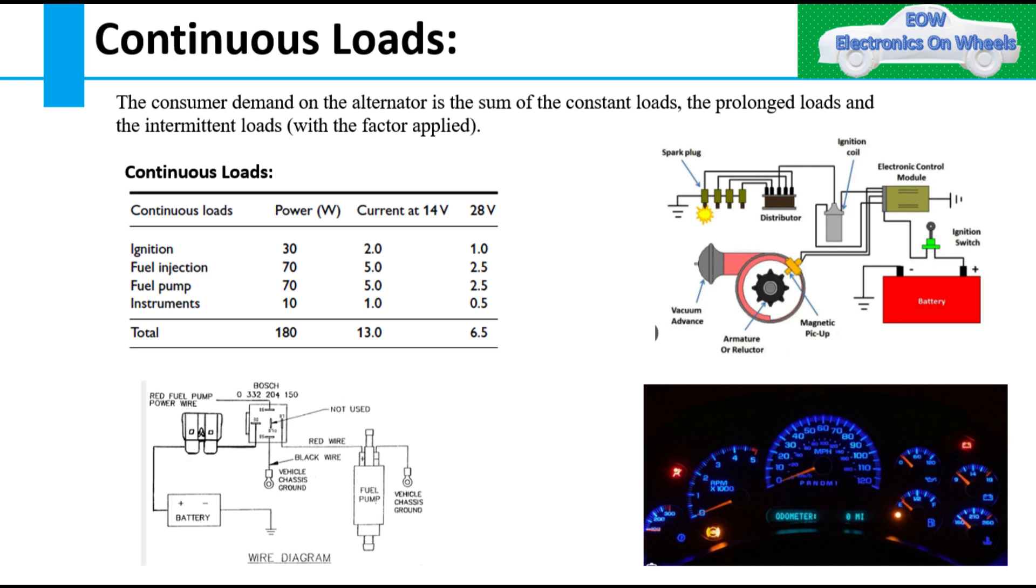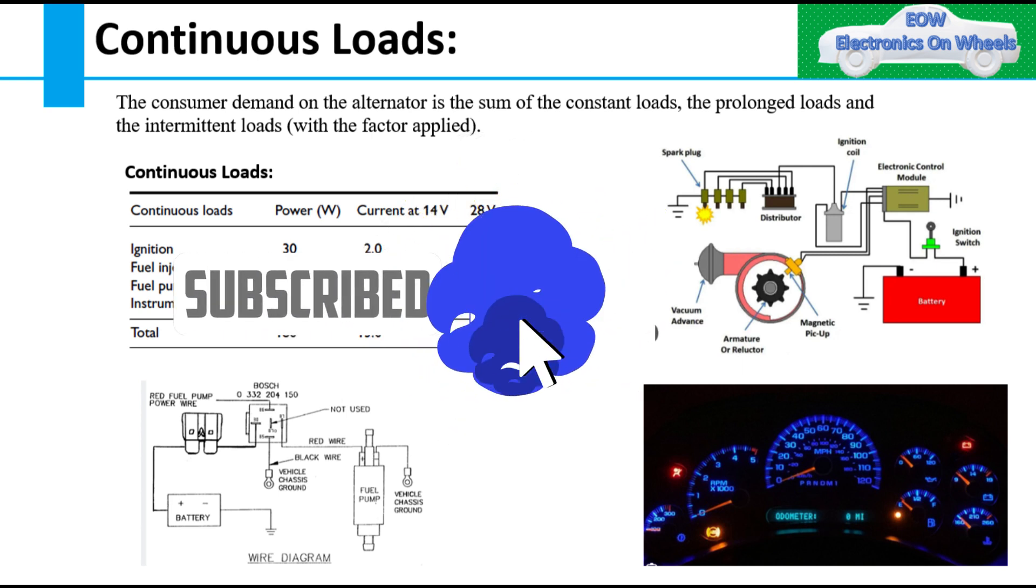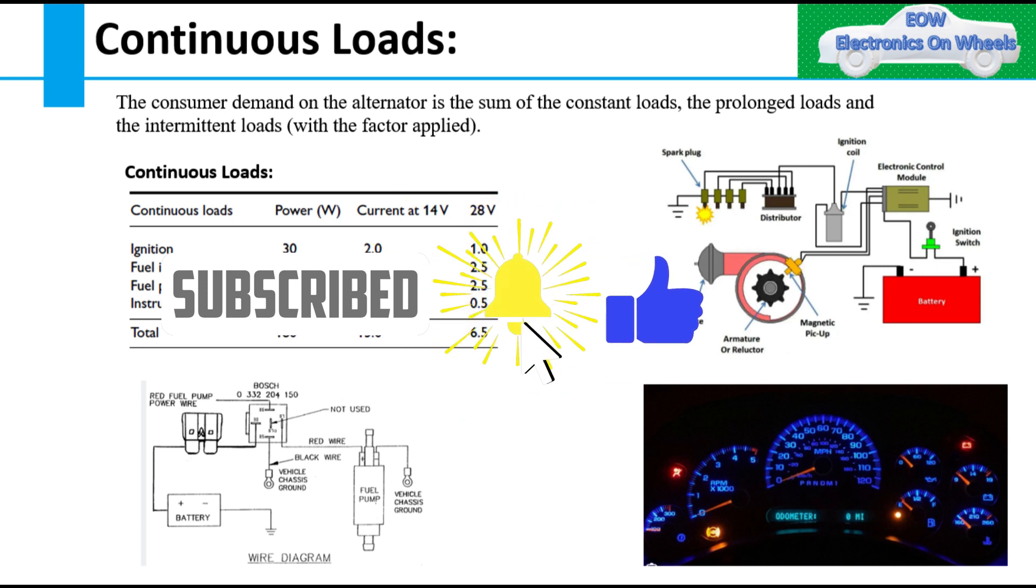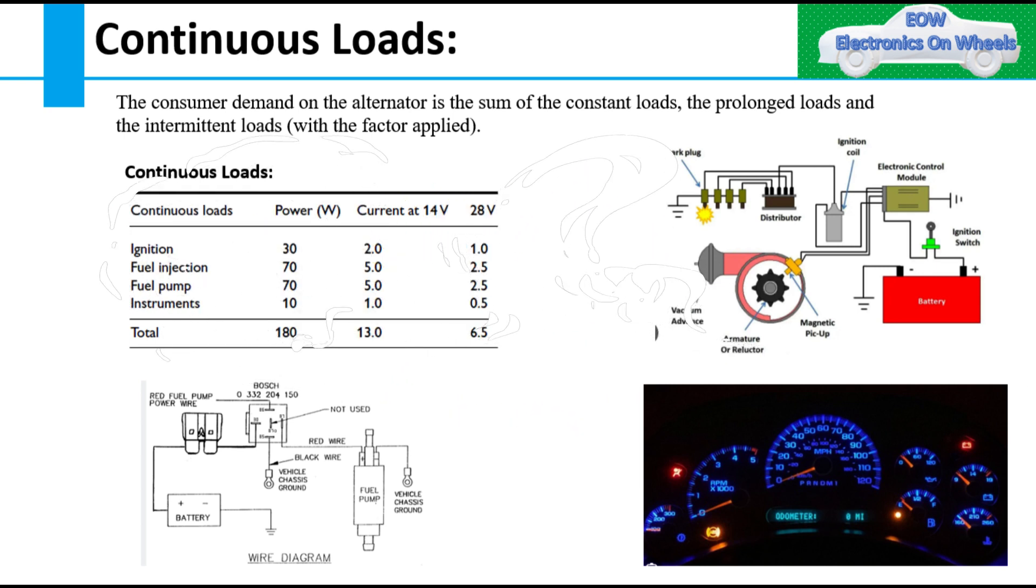I have shown you here power and current value at 14 volt and 28 volt for all these continuous loads. All these current values are typical approximate values. Power is equal to V multiply current.